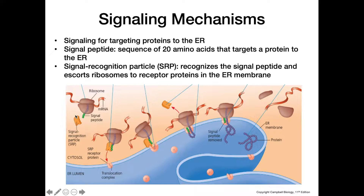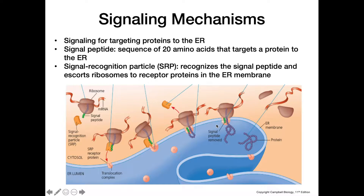What happens is we have this signal recognition particle right here that's going to recognize the signal peptide and bring the peptide, as well as the entire ribosome and mRNA complex, to this translocation complex on the membrane of the ER. Once this gets to the ER membrane, the ribosome docks with this translocation complex and the signal recognition particle dissociates, and the peptide will continue to get synthesized through this translocation complex and fed into the lumen of the endoplasmic reticulum.